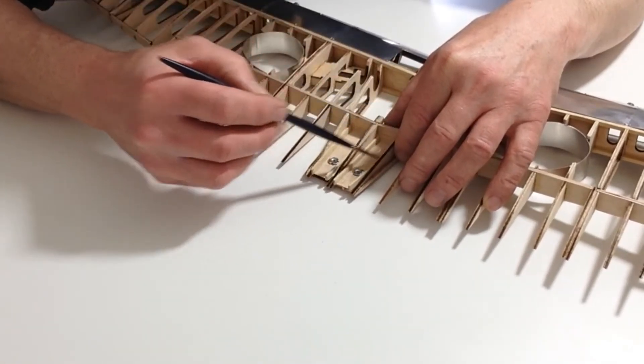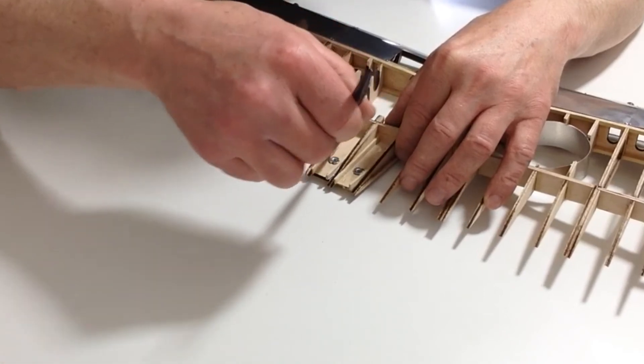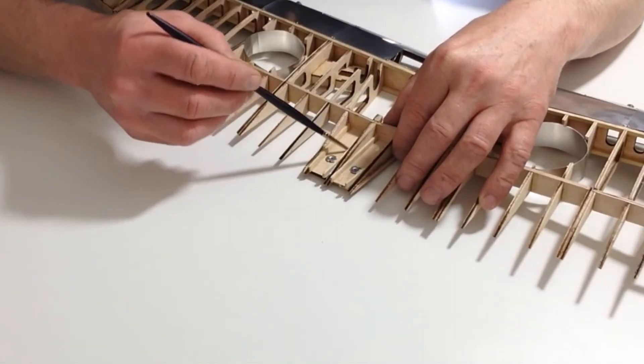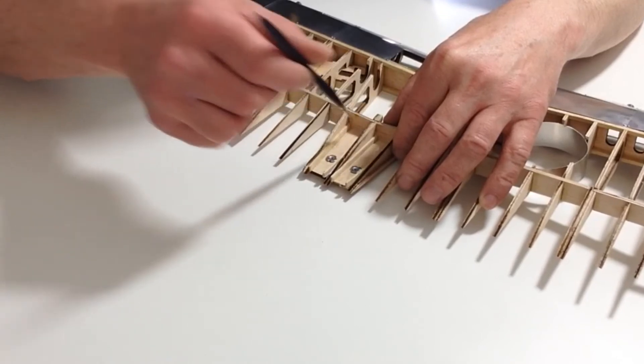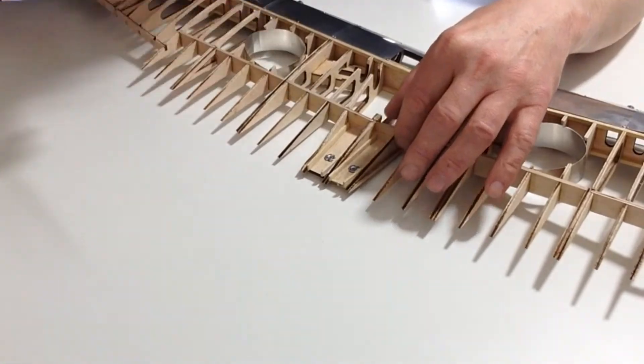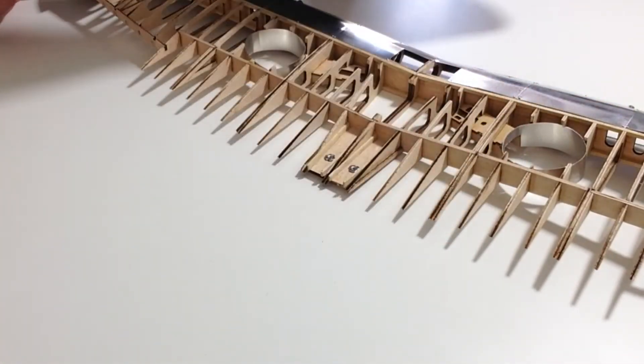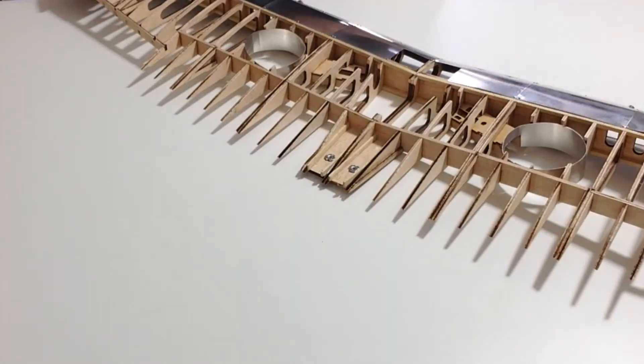Once that's completely dry, sand these edges down flush with the rest of the wing, as you can see in the following photograph.